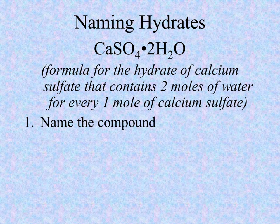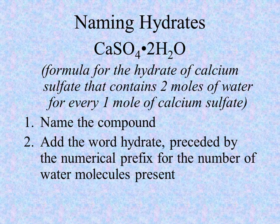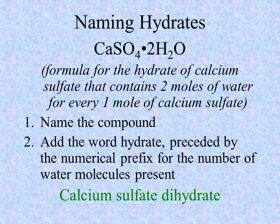To name the hydrate, you name the ionic compound as you typically would — whether you need to use the stock system, whether you have to change the ending to -ide if it's a binary compound, or if it's a polyatomic ion, name it just as you would name any ionic formula. So in this case, CaSO4 is calcium sulfate. To indicate that water is included in that crystalline structure in a hydrated form, the word hydrate is used rather than water, and a prefix is used to indicate the number of water molecules present. If there's no number, it's understood to be one and the prefix mono would be used. Here we have two waters, so we would use the term dihydrate, and so altogether this would be named calcium sulfate dihydrate.